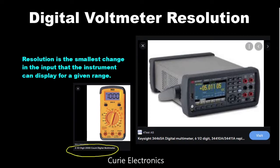It gives an idea about the resolution of the multimeter. On the right, if you see the Keysight multimeter, it is a high precision multimeter and it is a six and half digit multimeter. So today we will see what these multimeters mean.